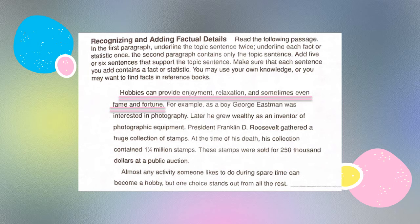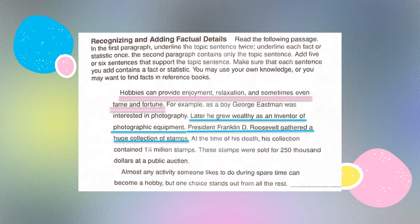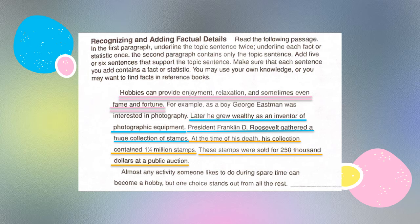"President Franklin D. Roosevelt gathered a huge collection of stamps" — again, this is a fact because it's something that can be proven. "At the time of his death, his collection contained one and one-fourth million stamps" — is this a fact or a statistic? That's a statistic because you've added numbers into it. "These stamps were sold for $250,000 at a public auction" — also a statistic because you have numbers there.